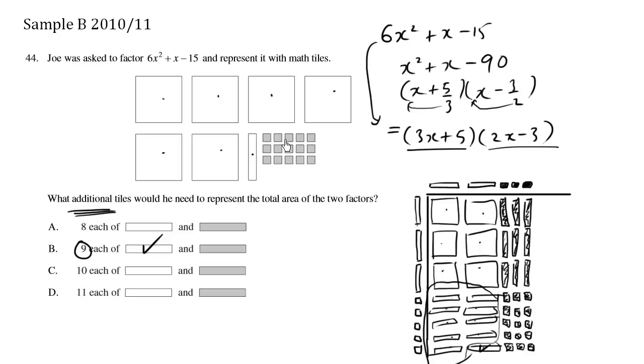And also, we have 15 of the negative small squares, and we already have all of these pieces here. I don't see any negative x bars here. And so, we need 9 more of these to complete the set. So, 9 each of this white bar, as well as this negative bar. B is the correct answer.